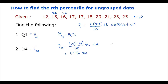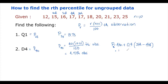The 4.4th observation is the fourth plus 0.4 times (the fifth minus the fourth observation). The fourth observation is 17 and the fifth is also 17, so this becomes 17 plus 0.4 times (17 minus 17), which equals 17 plus 0 equals 17. So the fourth decile is 17.